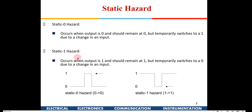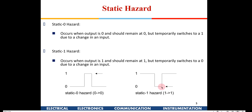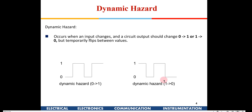Similarly, a static one hazard means the output has to remain one for a particular input combination. If one of the inputs changes, the output still has to remain one. But because of some unequal propagation delay, the output flips to zero for a fraction of a second and then comes back to one.